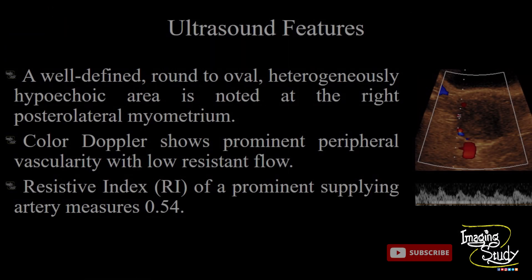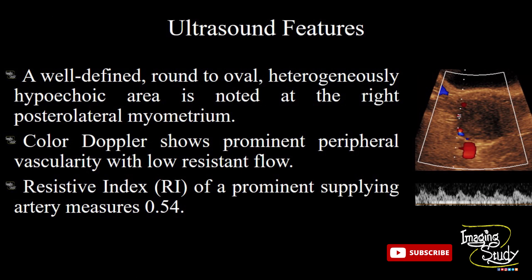In summary, a well-defined round to oval heterogeneously hypoechoic area is noted at the right posterolateral myometrium. Color Doppler shows prominent peripheral vascularity with low-resistant flow. The resistive index of the prominent supplying artery measures 0.54.